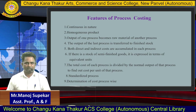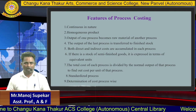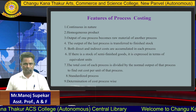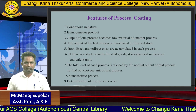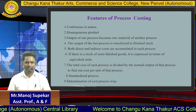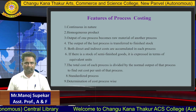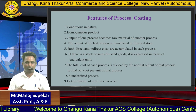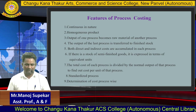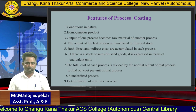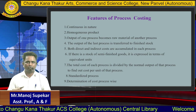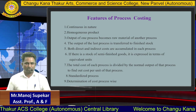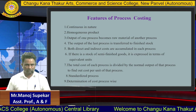The next feature is that the output of one process becomes the input of the next process. For example, the output of the raw material process is the input of the work-in-progress process, and the output of the work-in-progress process is the input of the finished goods stage. The output of the last process is transferred to the finished stock account.